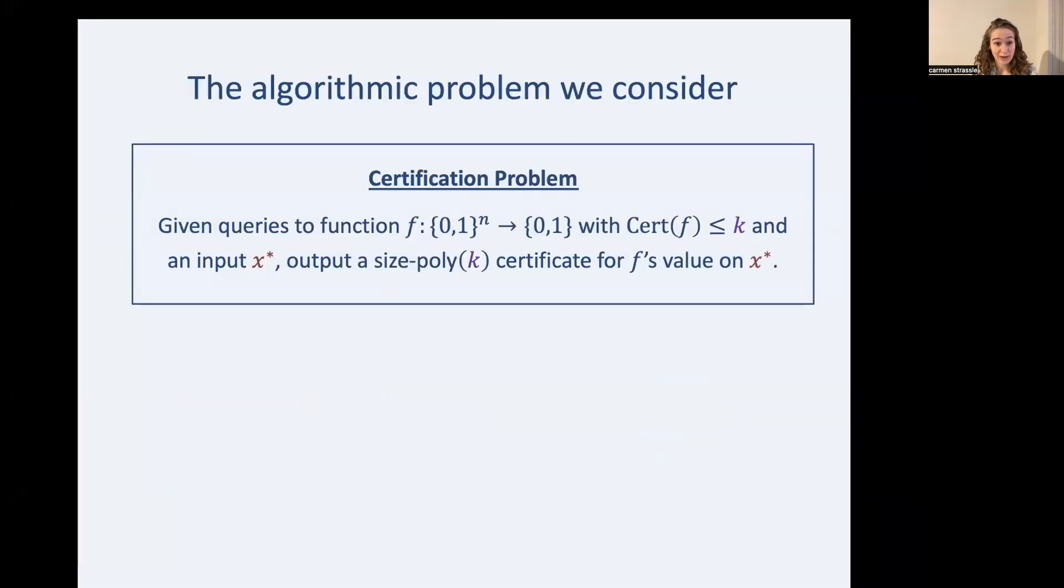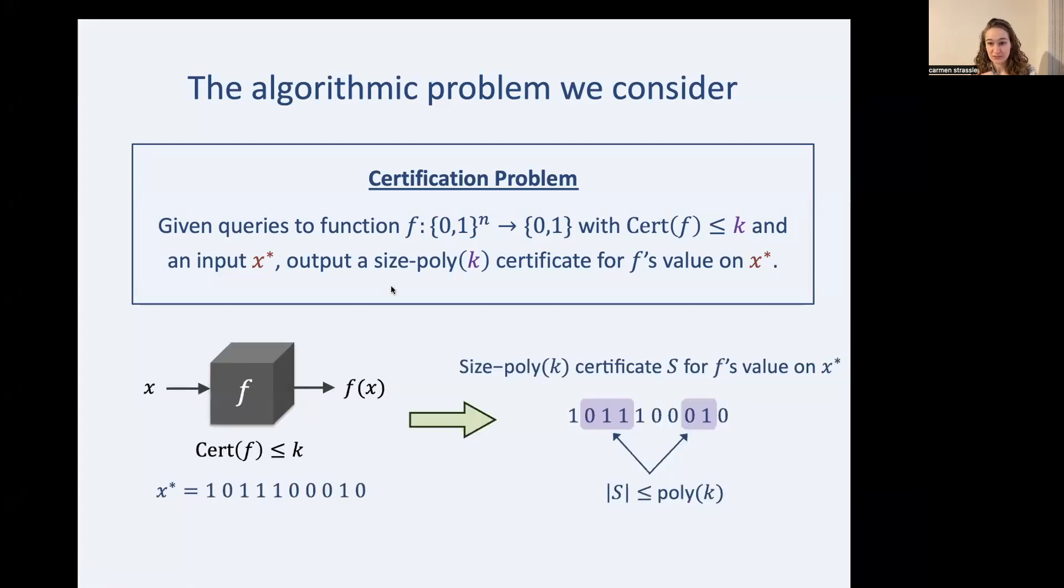So now we're ready to formally state the algorithmic problem that we're considering. Given queries to a function f with a certificate complexity less than or equal to k, and an input x star, we want to output small certificates for f's value on x star. And here, by small, I mean size poly k. So here's what I've just said illustrated.